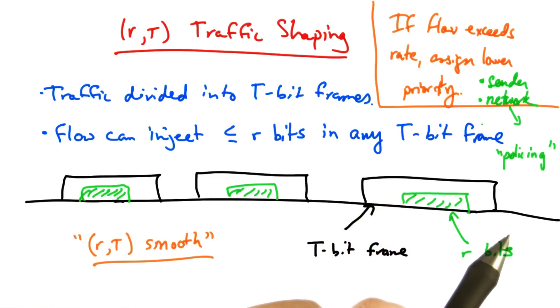In the network, the routers may mark packets with a lower priority, which is sometimes called policing.